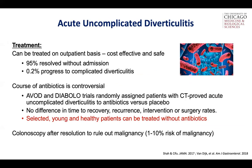The treatment for acute uncomplicated diverticulitis is relatively straightforward. It can be treated on an outpatient basis, is cost-effective and safe. 95% resolve without admission, and very few of these patients progress to complicated diverticulitis. Many aren't even seen by a surgeon. There is some controversy regarding antibiotics — multiple studies randomly assigning patients to antibiotics versus placebo show no difference in time to recovery, recurrence, intervention, or surgery rates. The most recent recommendations are that selected young and healthy patients can be treated without antibiotics. These patients, especially after their first episode, need to undergo a colonoscopy to rule out any malignancy.